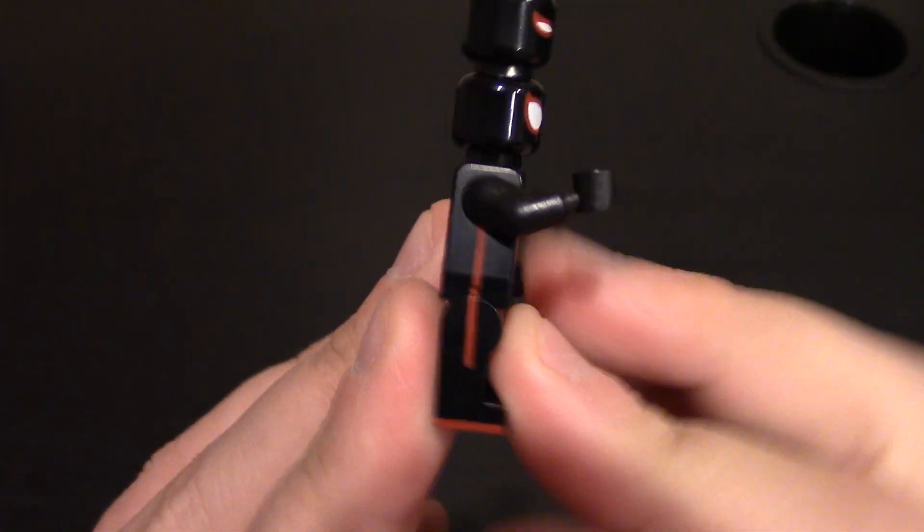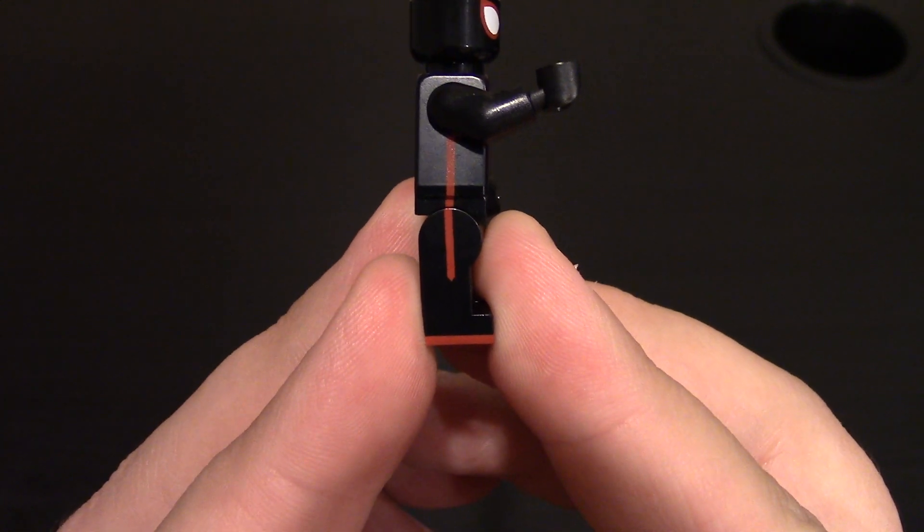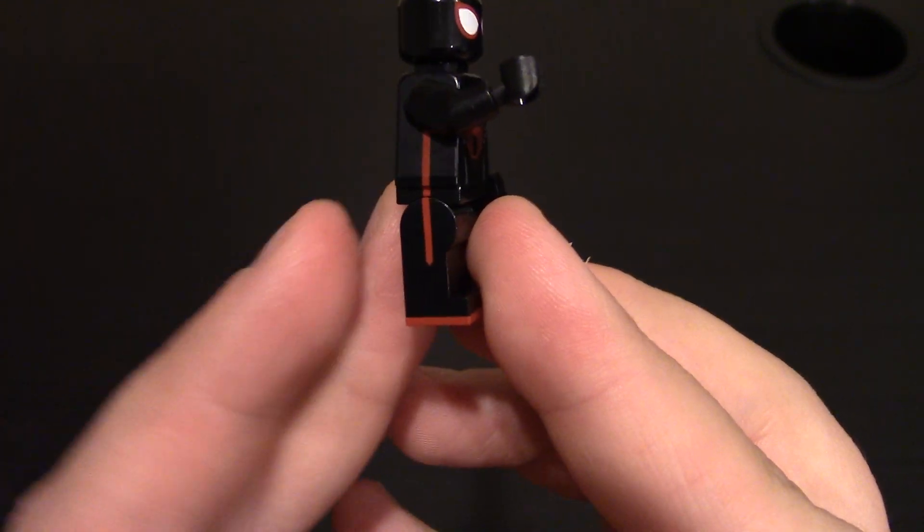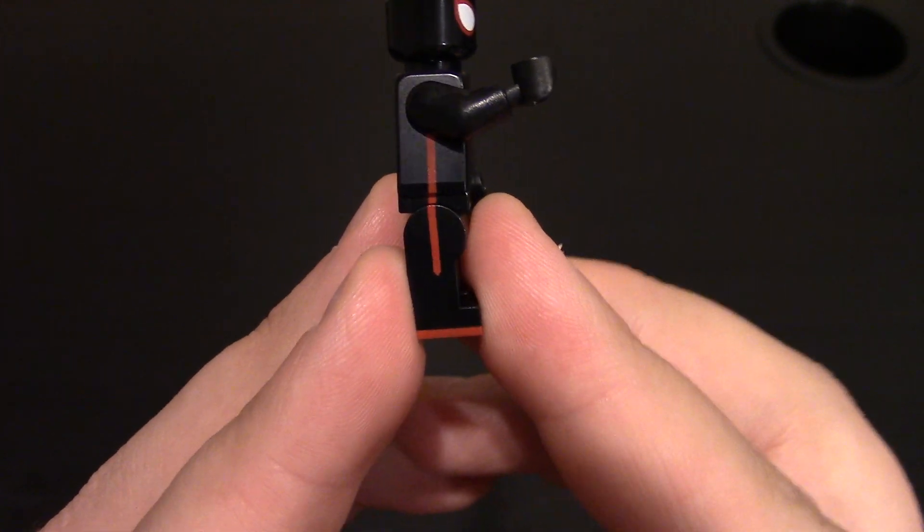Coming over to the other side of the body. Same thing. We have that printing on the side of the body, waist, and legs. That red line accent coming all the way down. And then you also have the bottom of the shoes there. No printing on the side of the arms or hands.